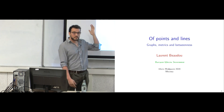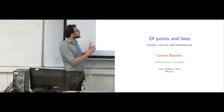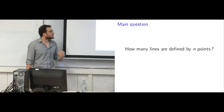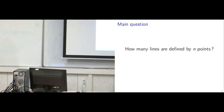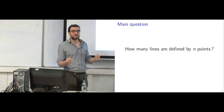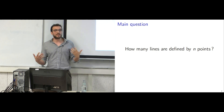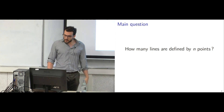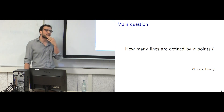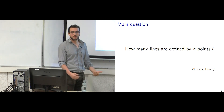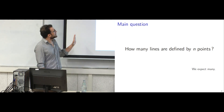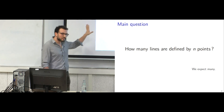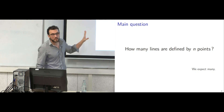We will be talking of points and lines mainly in different contexts. The context will be graphs, metrics, and betweenness — from the closest context to the widest. The main question of today is this one: if I give you n points in some context and I want to know how many lines are defined by these n points. The answer we would like to get is that we expect many such lines, and by many, we mean at least n most of the time.